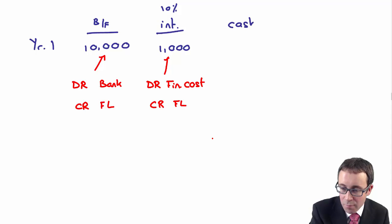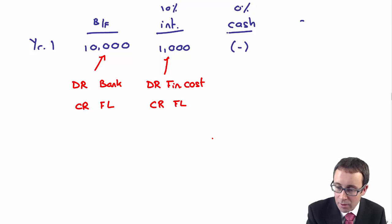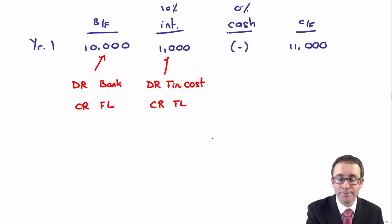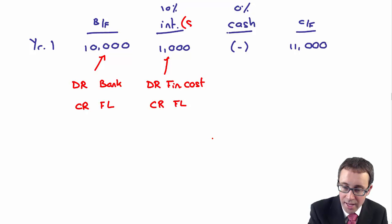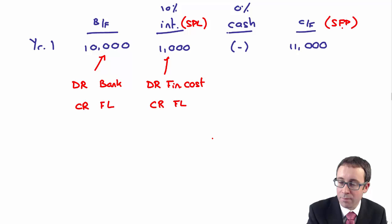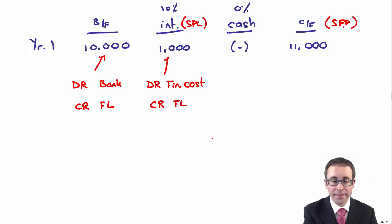In year one, the interest is $1,000. The coupon rate of cash that you pay is 0%, so that's zero. Your carry forward figure is $11,000. The interest expense goes in profit or loss. The carry forward goes on the statement of financial position.